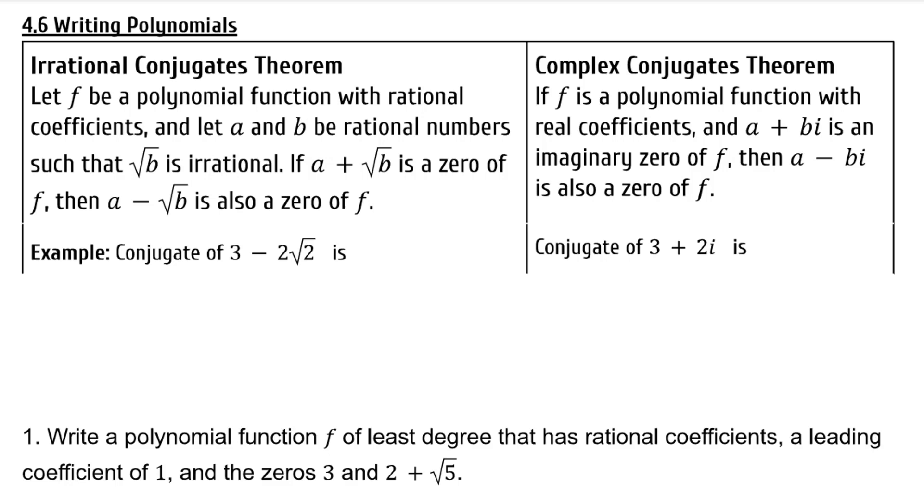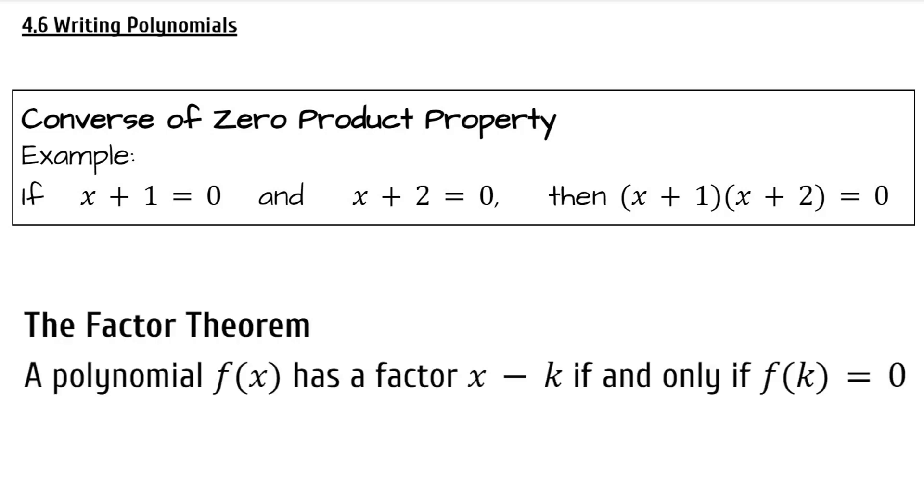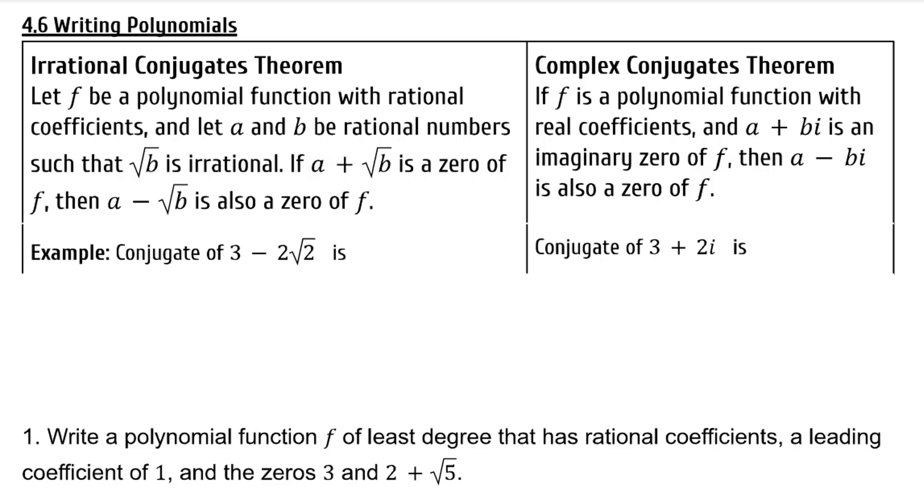While finding the rational zeros of a polynomial in video 4.5, we talked about the converse of the zero product property and the factor theorem. So instead of finding the zeros of a polynomial, if you're given the zeros, can you find the polynomial? And that's what we're going to do today, write polynomials.